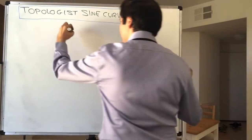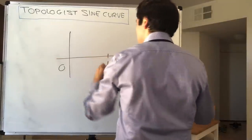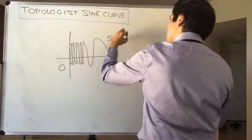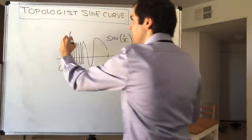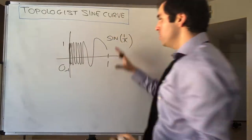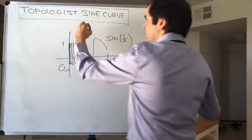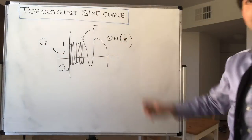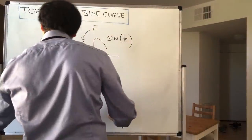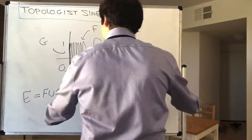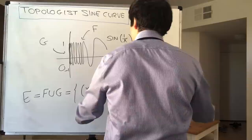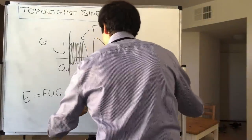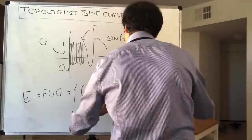What it looks like is simply as follows. It's defined on (0, 1], and it's basically the curve sine of 1 over x, which oscillates like crazy, except you're just adding the segment here between minus 1 and 1. So it's this curve plus the straight line segment. The curvy part we'll call f and the line segment part we'll call g. So the whole thing is called f union g, which is just the set of points (x, sine(1/x)) where x is between 0 and 1, union the straight line segment — so {0} × [−1, 1].